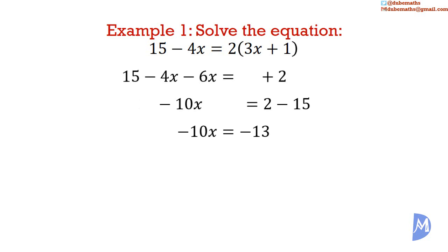We divide both sides by negative 10. The negative 10s cancel on the left-hand side to remain with x. And we have negative 13 divided by negative 10. 13 divided by 10 is 13 over 10. And the negative divided by negative is a positive. So x is equal to positive 13 over 10.